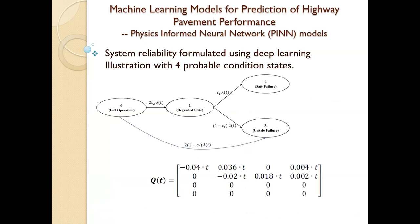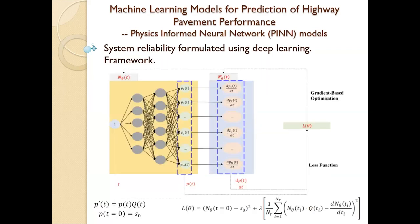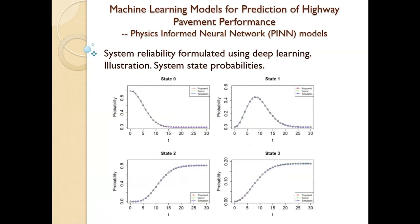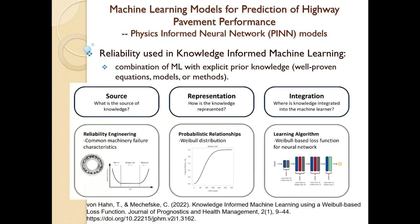Here's an example from the literature: you have an element that could be in four different states, you have those transition functions, and you can use this to find optimal results for the state probabilities. There's also knowledge-informed machine learning, which is similar to physics-informed, except that in this case you use reliability and failure characteristics to influence your loss function, which also gives you a better result.